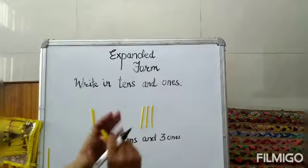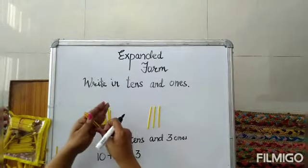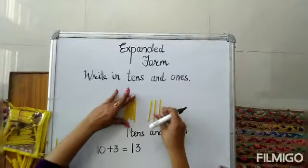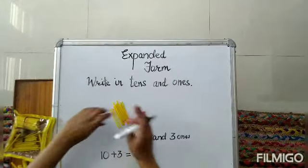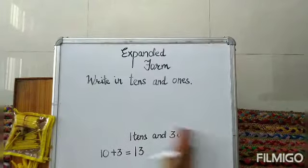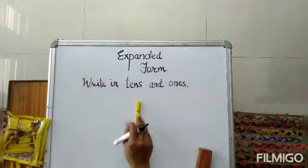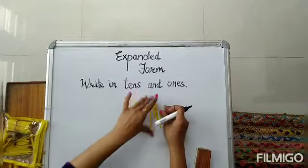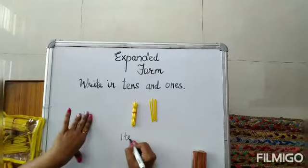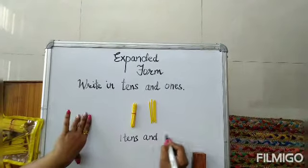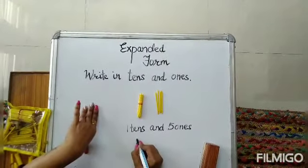3 ones — now 4, 5, 6, 7, 8, 9, 10 — so 10 plus 3 makes 13. Now if I am giving you 1 bundle of 10 and 5 loose sticks — 1 ten and 5 ones — it is equal to 15.